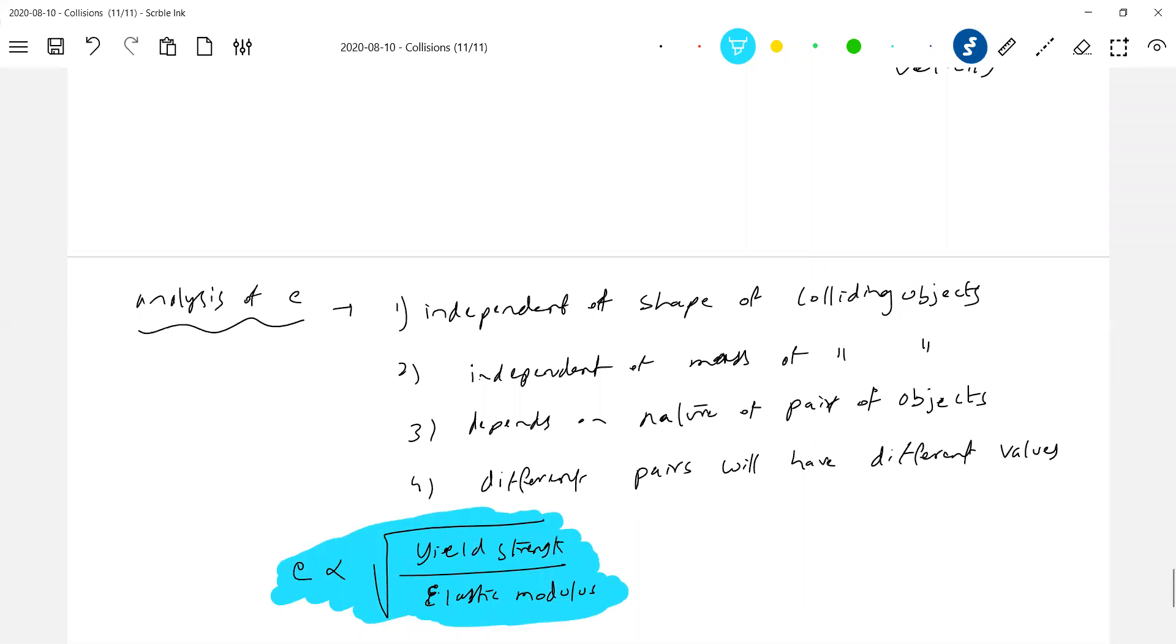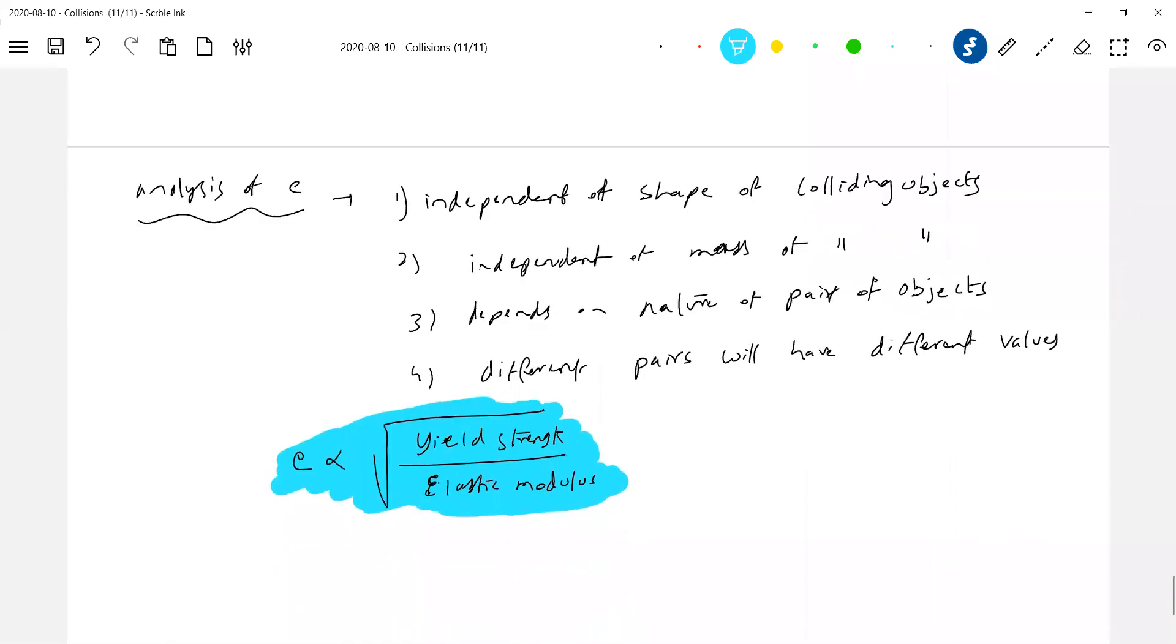Later in elasticity I'll stress it. E is directly proportional to square root of yield strength by elastic modulus. There's a basic idea of the coefficient of restitution. It should be different for different pairs of objects.